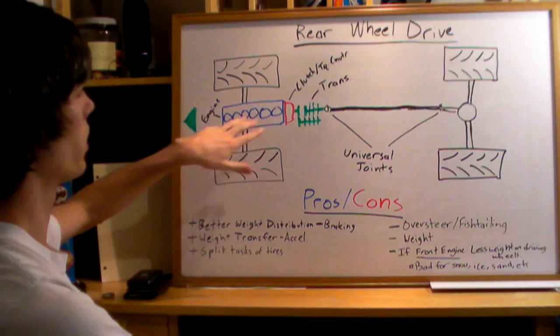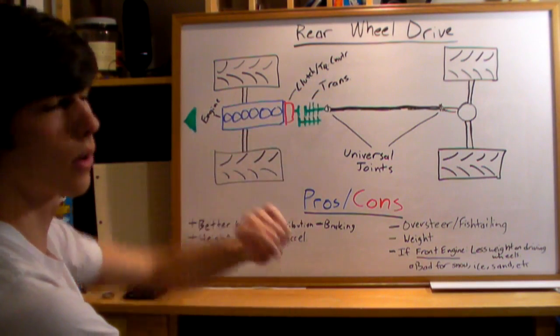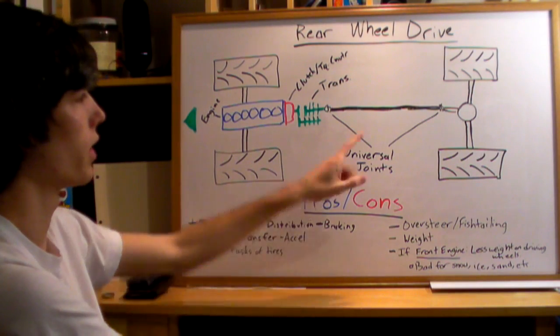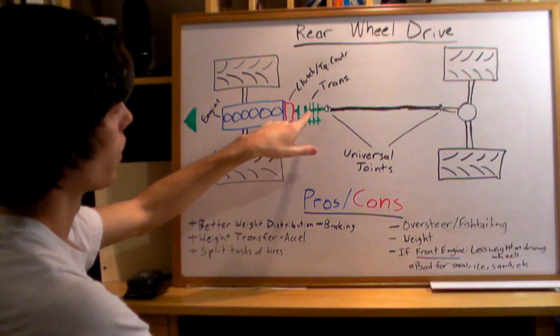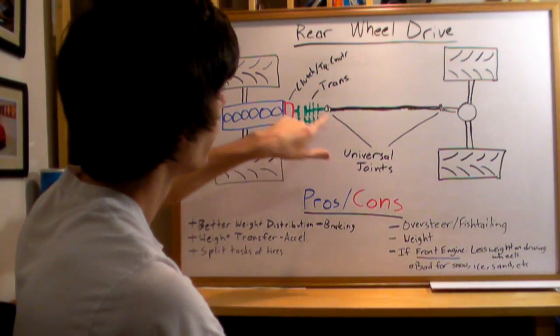Here we've got the engine. The engine's connected to the transmission via clutch or torque converter, depending if it's automatic or manual. The transmission uses a drive shaft to send power to the rear wheels.